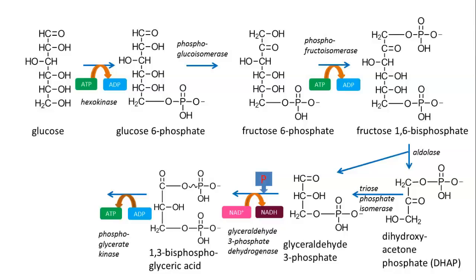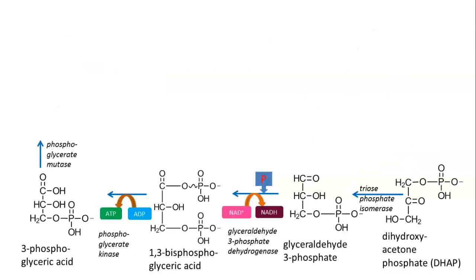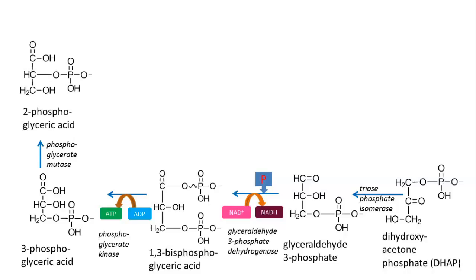The enzyme phosphoglycerate kinase transfers the phosphate from ADP to make ATP, giving us a molecule called 3-phosphoglyceric acid. The 3-phosphoglyceric acid is then picked up by an enzyme called phosphoglycerate mutase — 'mutase' meaning it's going to change it — and it converts it into 2-phosphoglyceric acid. You can see the phosphorus unit is now moved to the number two carbon.